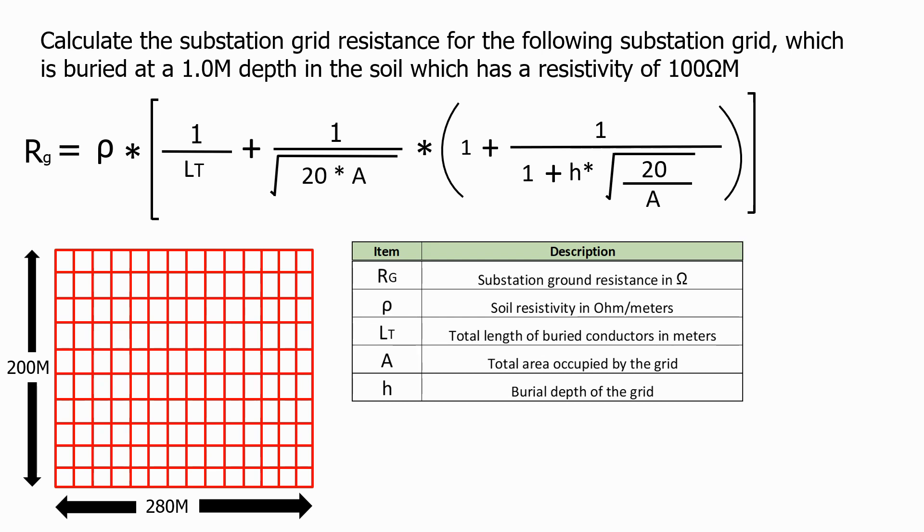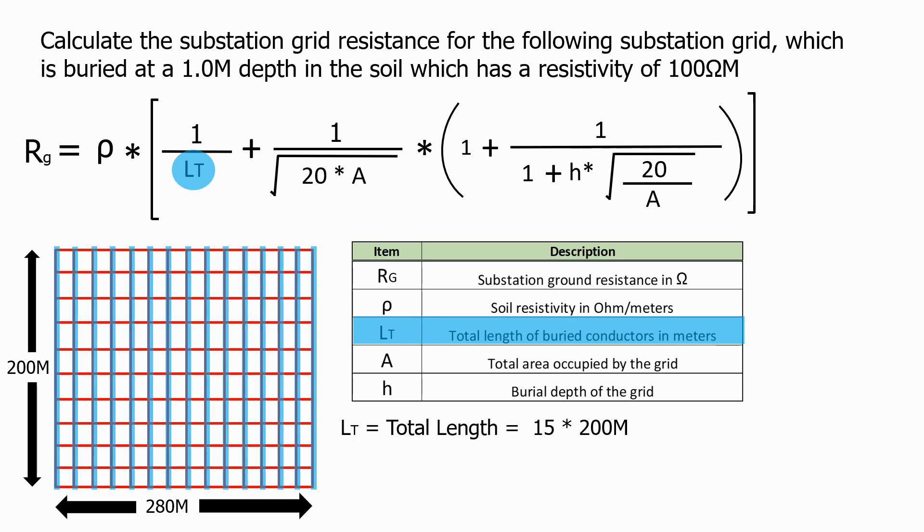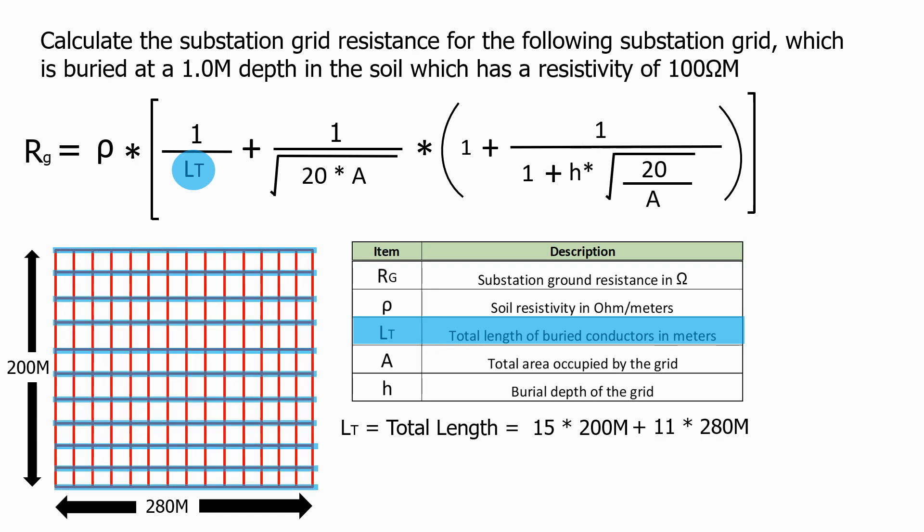Firstly, we need to develop some calculations. The first one is Lt, which is the total length of buried conductor. Looking width-ways, we have 15 conductors all with a length of 200 metres. Looking length-ways, we have 11 conductors all with a length of 280 metres. Which gives us a total buried conductor length of 6,080 metres, which is a lot of expensive copper conductor.